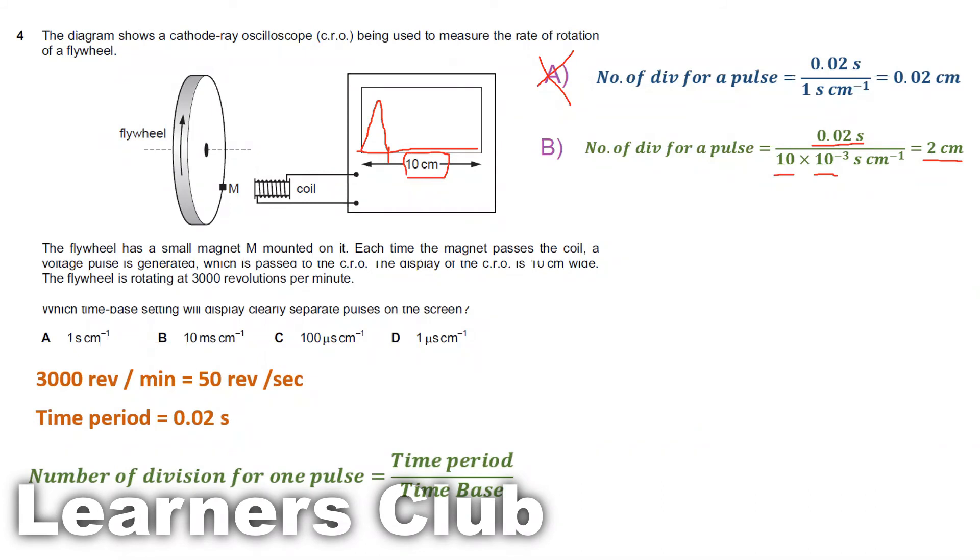Option C: 100 microseconds. Divided by 100 into 10 to the power minus 6, that gives 200 centimeters. So to get one pulse, you need a screen which is wide enough to give 200 centimeters. But we only have 10 centimeters, so we cannot get a complete one pulse. So this is not the answer.